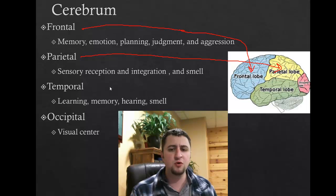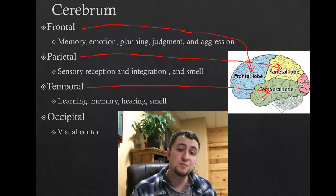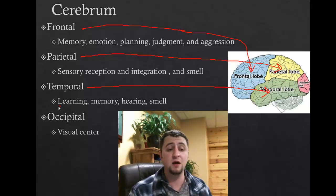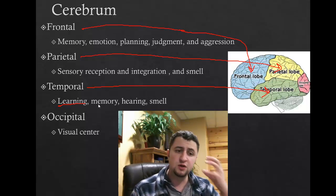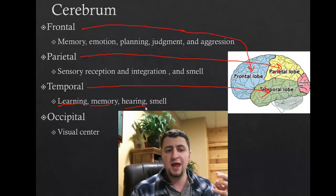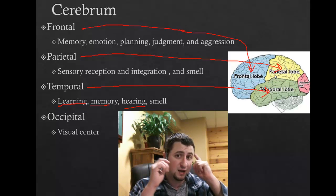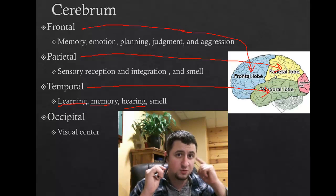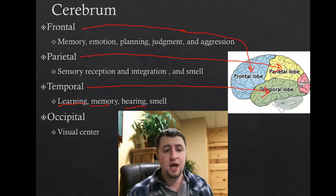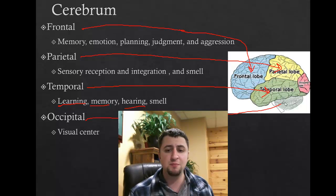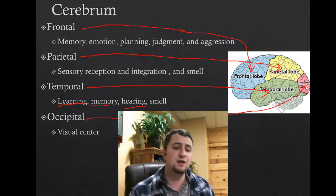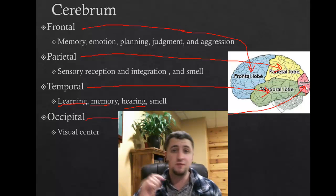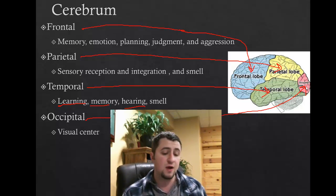The temporal lobe handles some smell processing, but primarily it's where learning, memory, and hearing occur. Located on the side of your head right where your ears are, it's primarily responsible for a lot of hearing. The occipital lobe at the back is primarily responsible for the visual center — it takes in images that your eyes see.